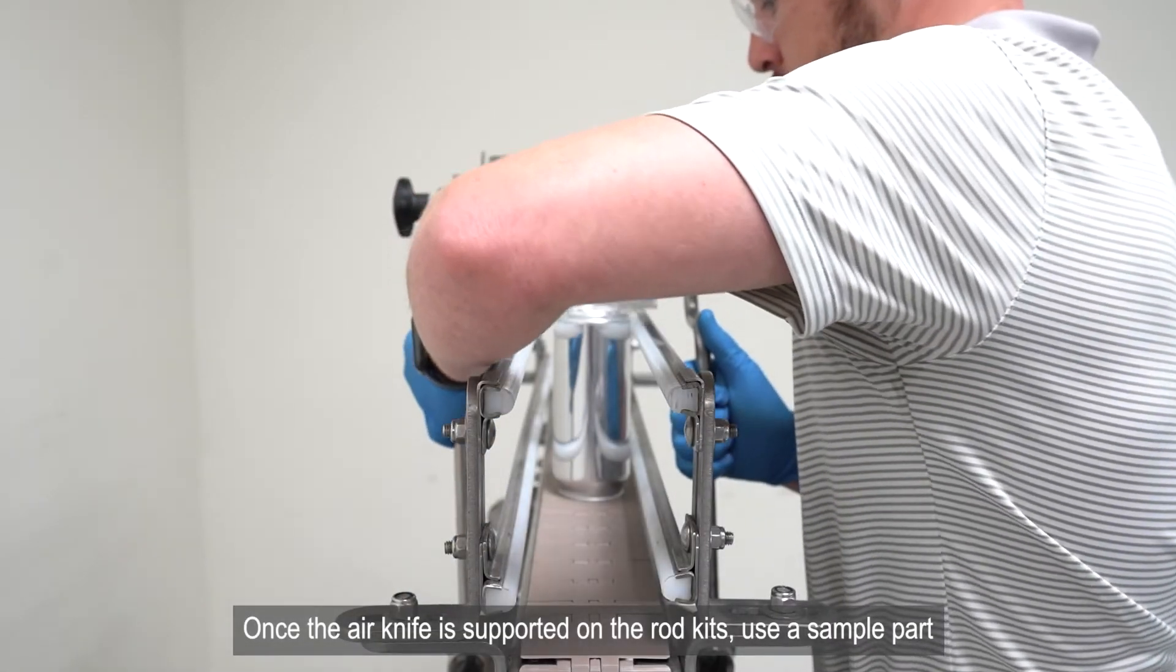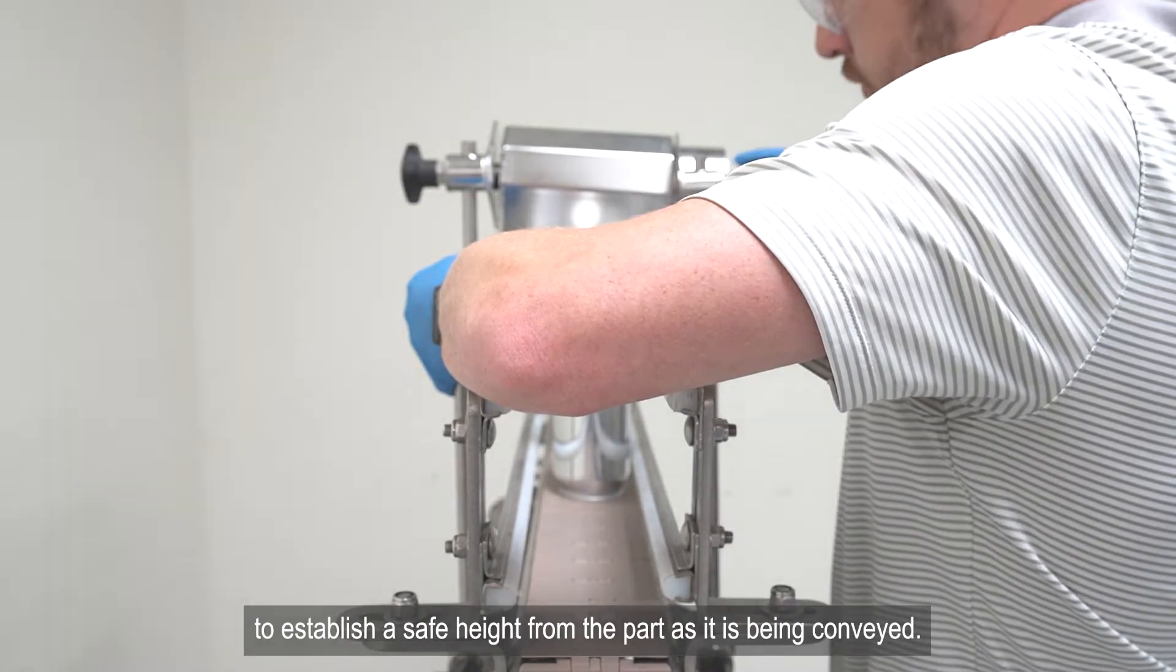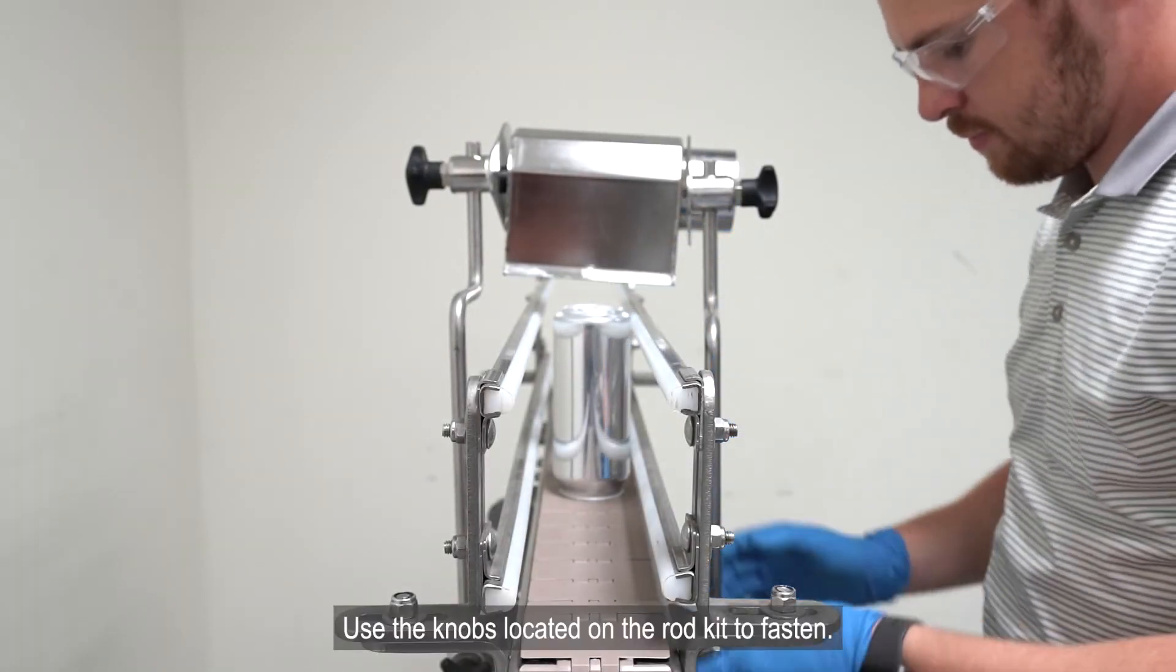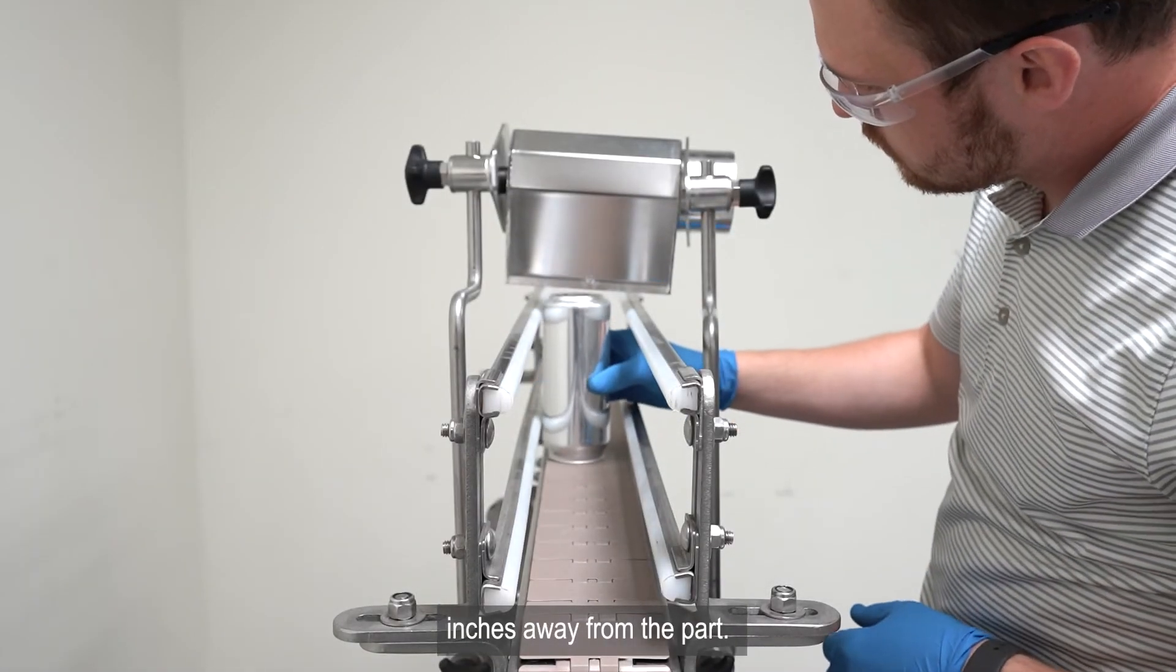Once the air knife is supported on the rod kits, use a sample part to establish a safe height from the part as it is being conveyed. Use the knobs located on the rod kit to fasten. A safe distance is about 1-2 inches away from the part.